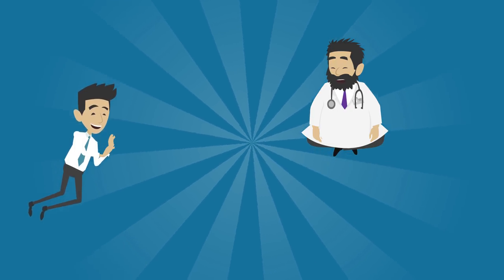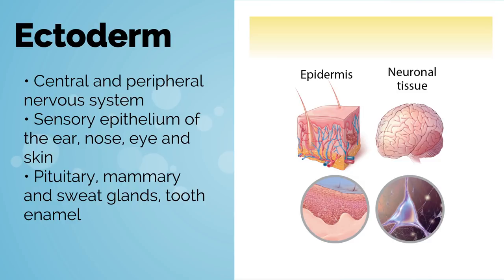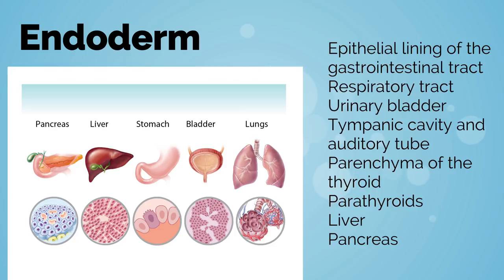Now let's take a closer look at the three germ layers. Remember, we have now moved into the embryonic phase. The ectoderm gives rise to organs in contact with the outside of the body, including the central and peripheral nervous system, sensory epithelium of the ear, nose, eye, and skin, as well as the pituitary, mammary, and sweat glands, and even tooth enamel. The mesoderm gives rise to the paraxial, intermediate, and lateral plates. The paraxial somites give rise to supporting tissues — muscle, cartilage, bone, and dermis — as well as the vascular system, urogenital system, spleen, and adrenal cortex. Endoderm gives rise to the epithelial lining of the gastrointestinal tract, respiratory tract, urinary bladder, tympanic cavity, and auditory tube, as well as the parenchyma of the thyroid, parathyroids, liver, and pancreas.